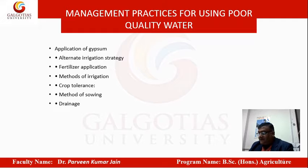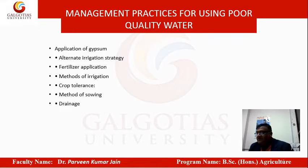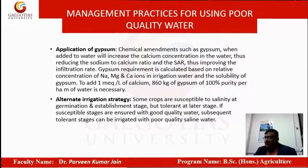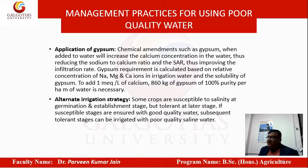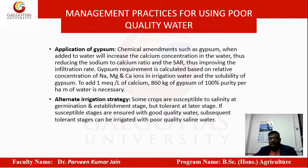Regarding the application of gypsum, you can apply gypsum to improve water quality and alter irrigation methods. For example, if it is 860 kg and you divide it by 10, it is 86 kg which the farmer can probably afford easily. This is the reason why these calculations are done.